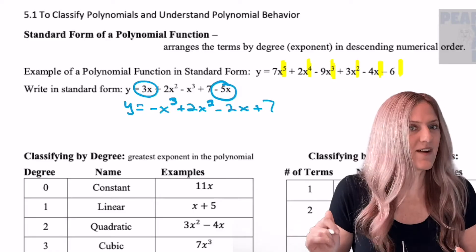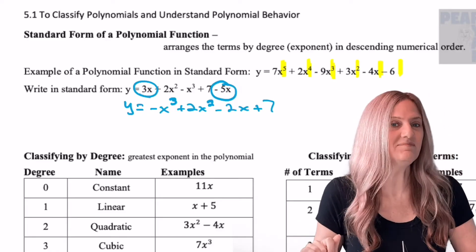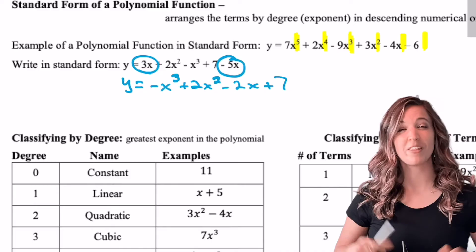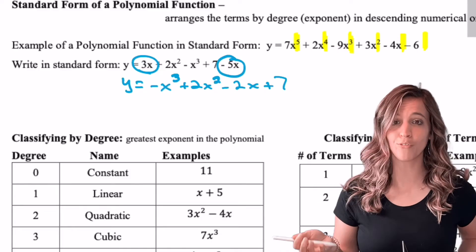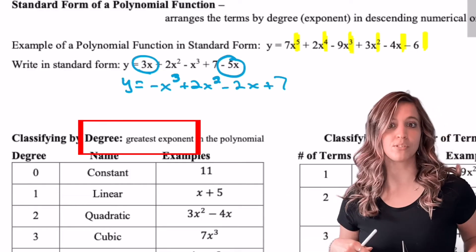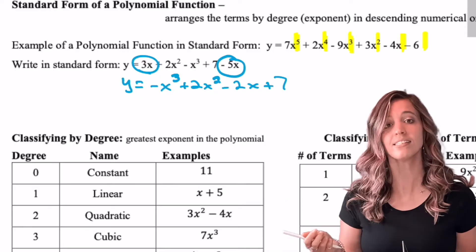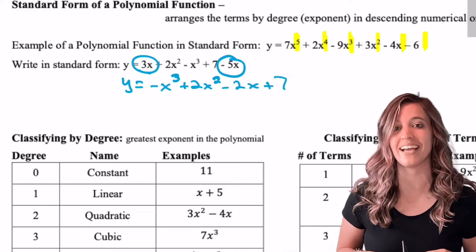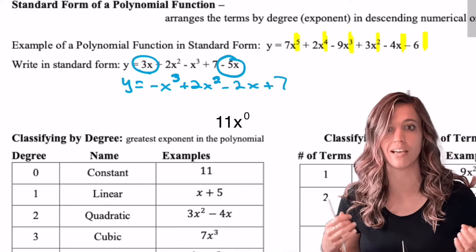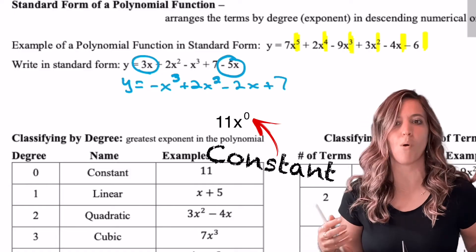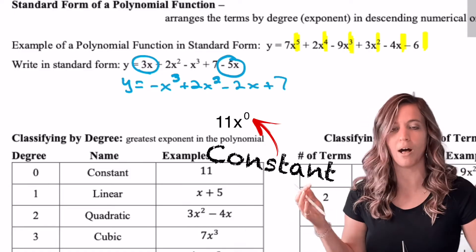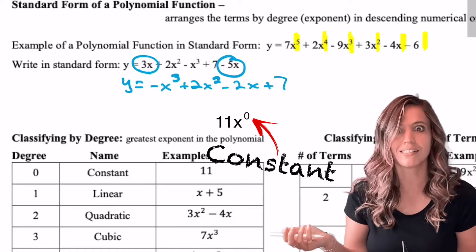Next, let's talk about classifying polynomials. We classify polynomials by the degree and number of terms in standard form. Let's look at the different degree names first. A constant is a polynomial where the highest exponent is 0, so it has a degree of 0. Which makes sense, right? If I have y equals 7 or y equals negative 12 or y equals 11, it's a constant number.